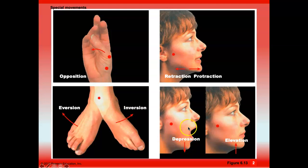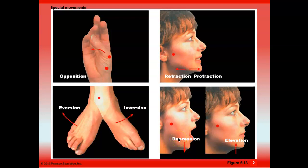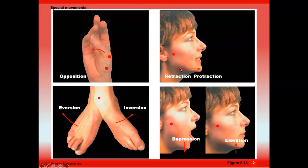Lifting your jaw is elevation; dropping your jaw is depression. Muscles of the jaw either elevate or depress it — saying a muscle 'helps in chewing' is not precise enough. You can also move your jaw forward and backward, called protraction and retraction, and the same applies to moving the whole head.